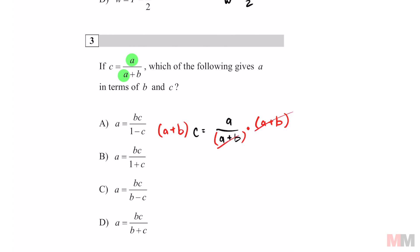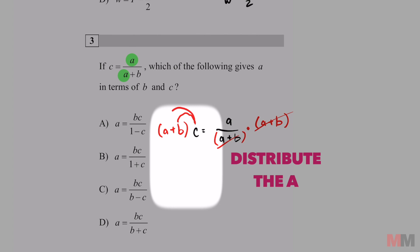So at least we don't have fractions anymore. We can distribute this before we rewrite it. So A times C is just AC. B times C is BC equals A.